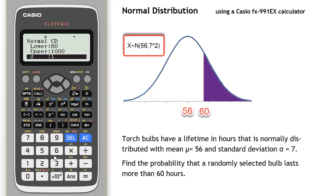Hit the equals button, put in the standard deviation of 7, hit the equals button, and put in the mean of 56.